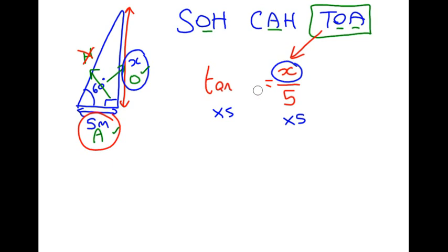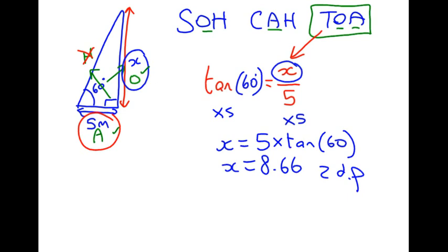Don't forget that our angle in this case is 60 degrees. Now, we do X equals 5 times tan 60. We put that in our calculator, 5 times tan 60, and we get the answer of 8.66. That's to two decimal places. So that's one example of using trigonometry to find a missing length.